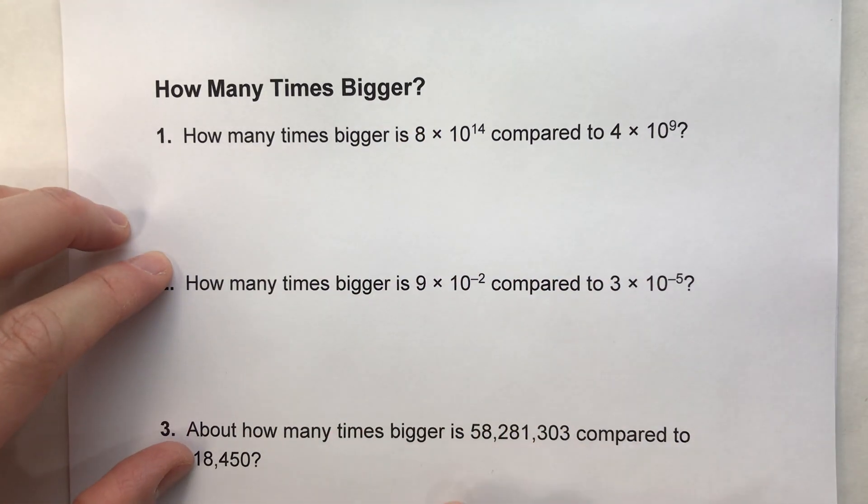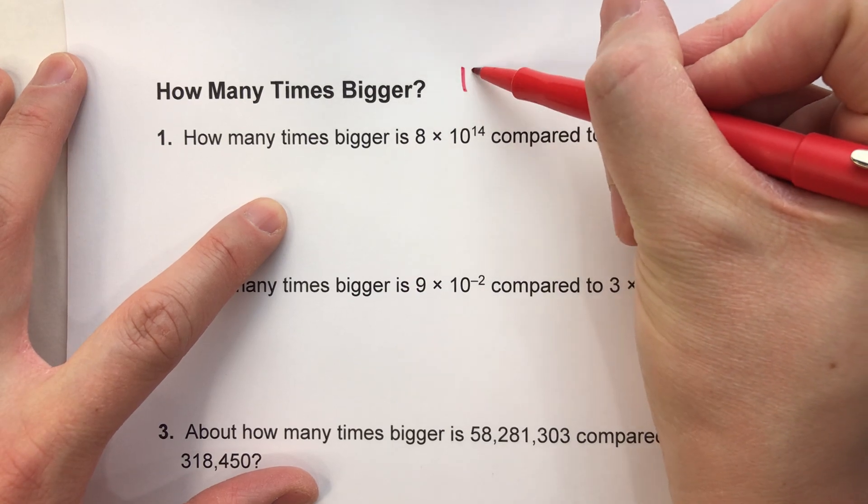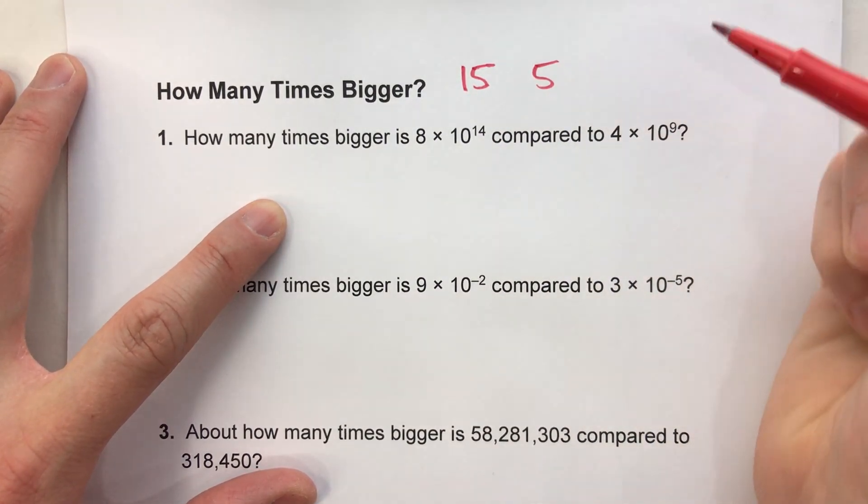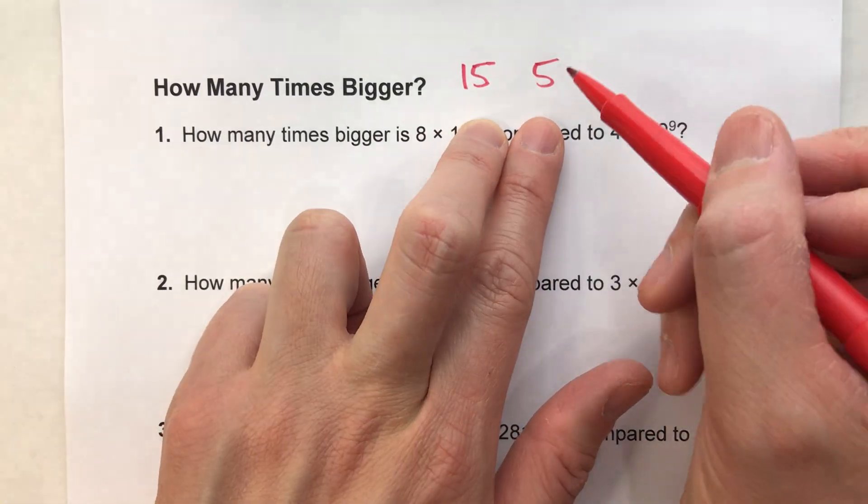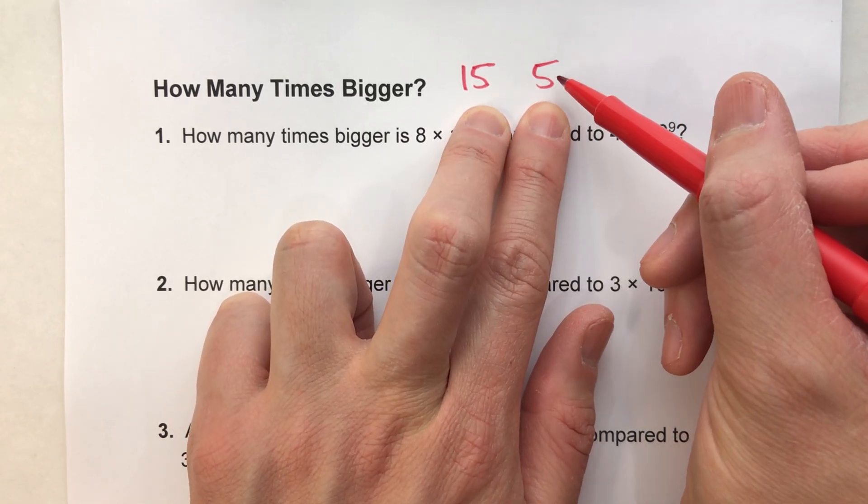So before we get into these complicated ones, let's do a simple example where I say, how many times bigger is 15 compared to 5? See with these simple numbers, it's really easy to say, I know, 15 is 3 times bigger than 5 because 5 times 3 is 15.